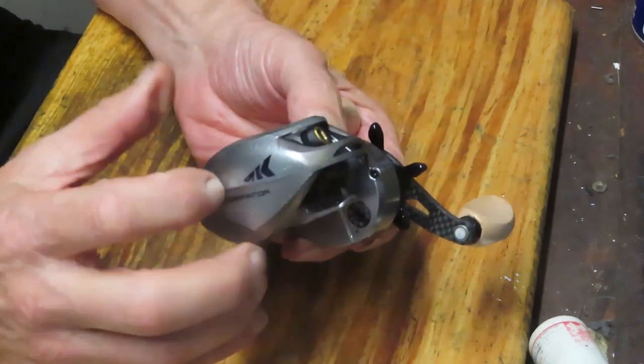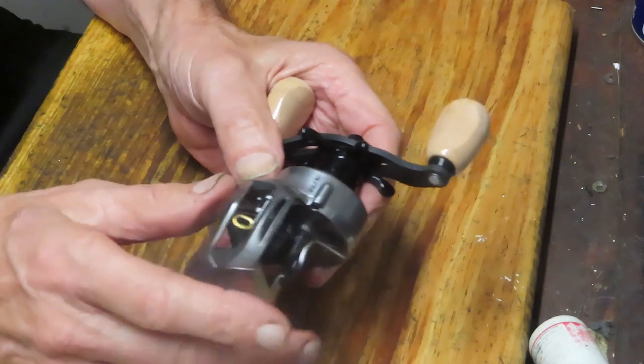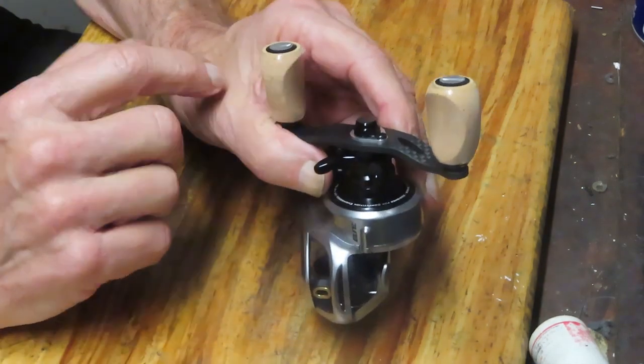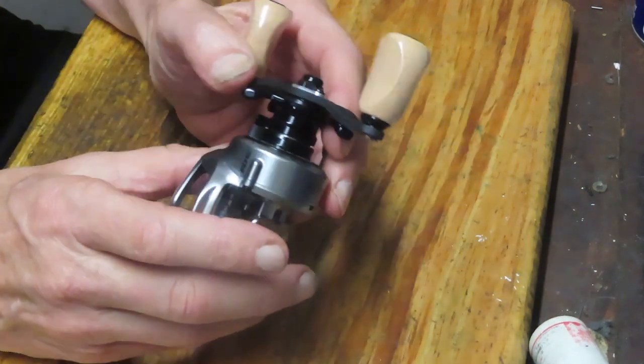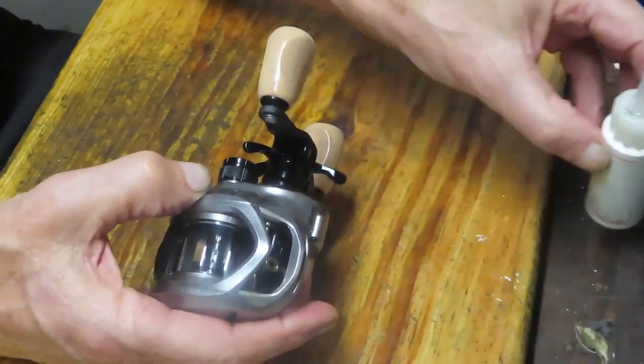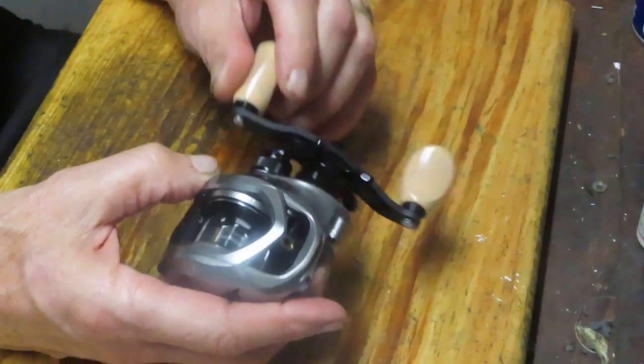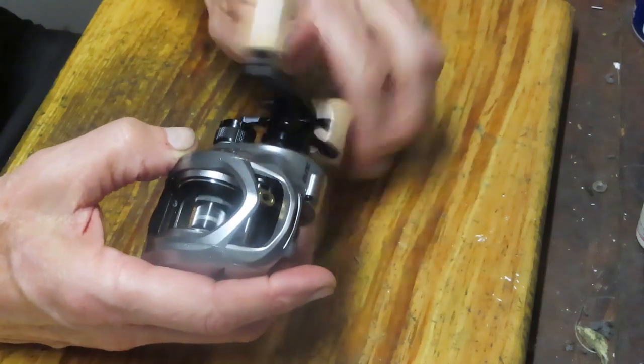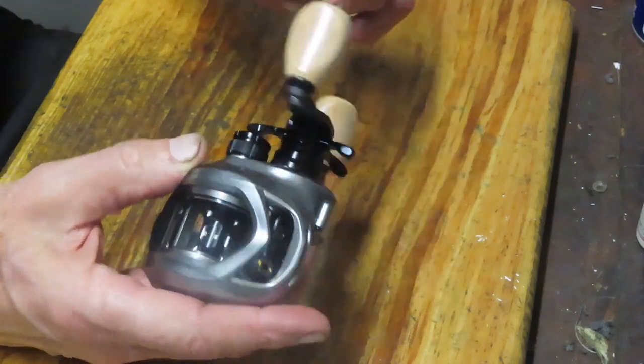It's got carbon side plates, aluminum frame, carbon handle, cork handles, and I believe it's got the carbon drag system in it as well. Very nice reel, easy to work, easy to spin.